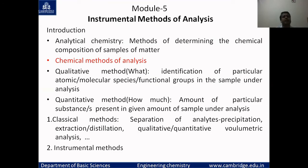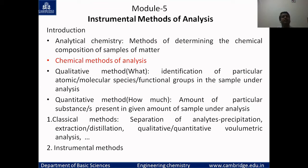Let us see what analytical chemistry is. Analytical chemistry is the branch of chemistry which deals with the methods of determining the chemical composition of samples of matter. The conventional chemical methods of analysis available to us are: one is qualitative method, and another one is quantitative method. The qualitative method is the method of identification of particular atomic, molecular species, or functional groups present in the given sample under analysis.